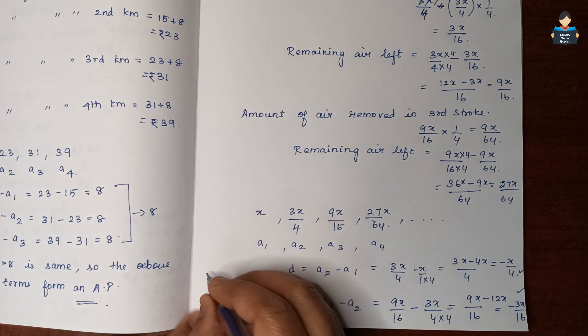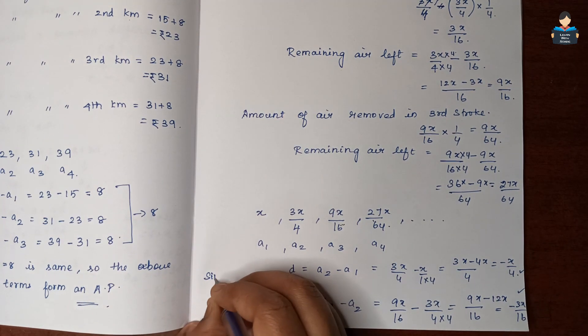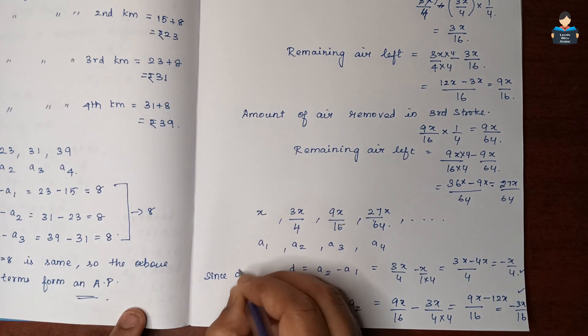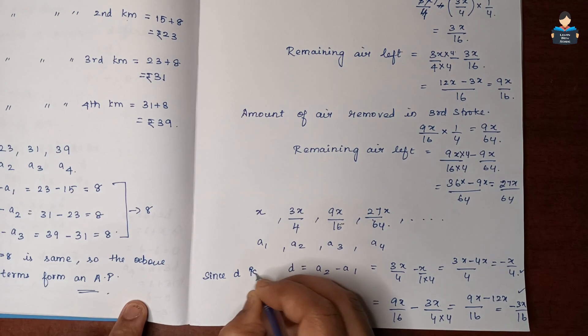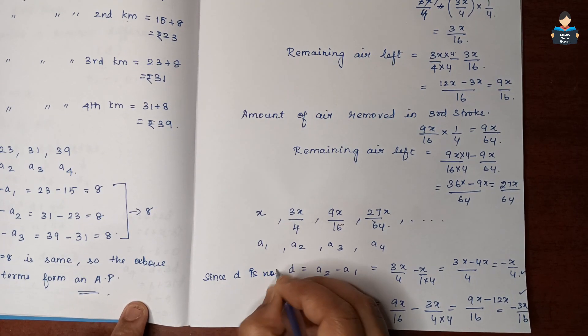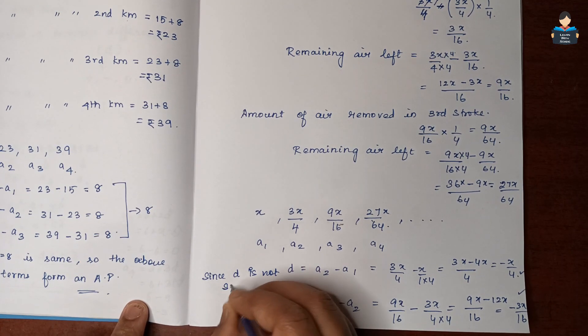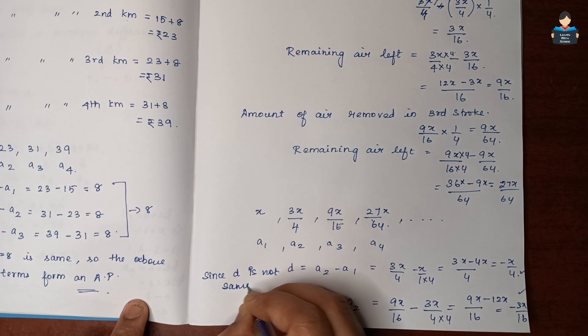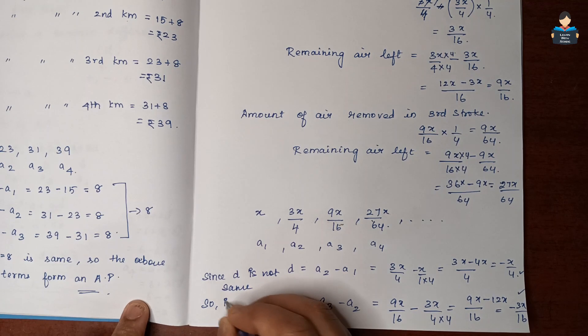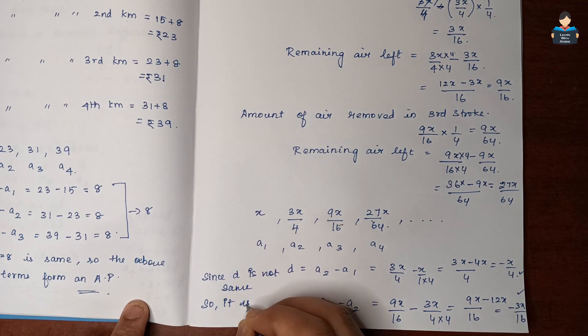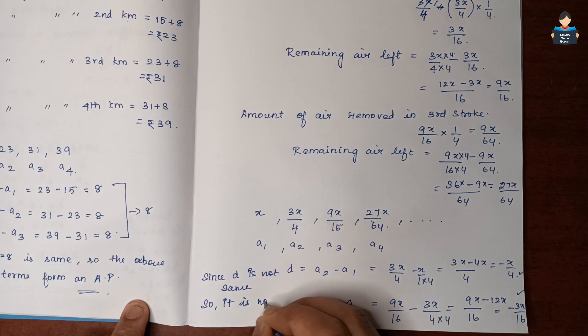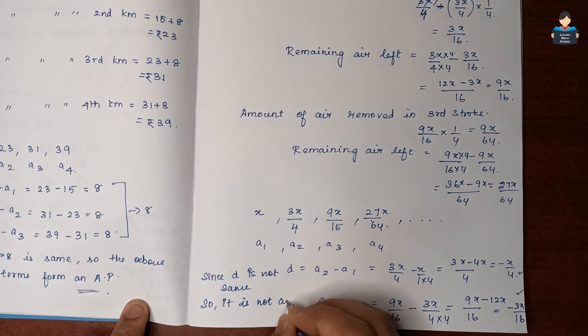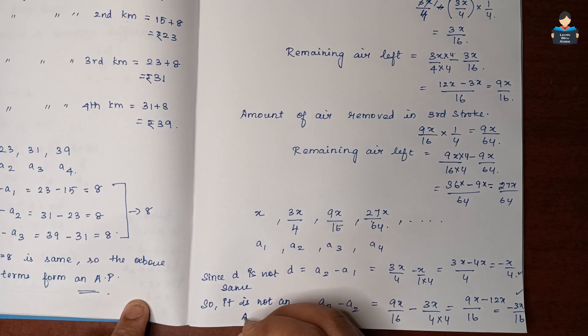Since D is not the same throughout the sequence, it does not form an AP.